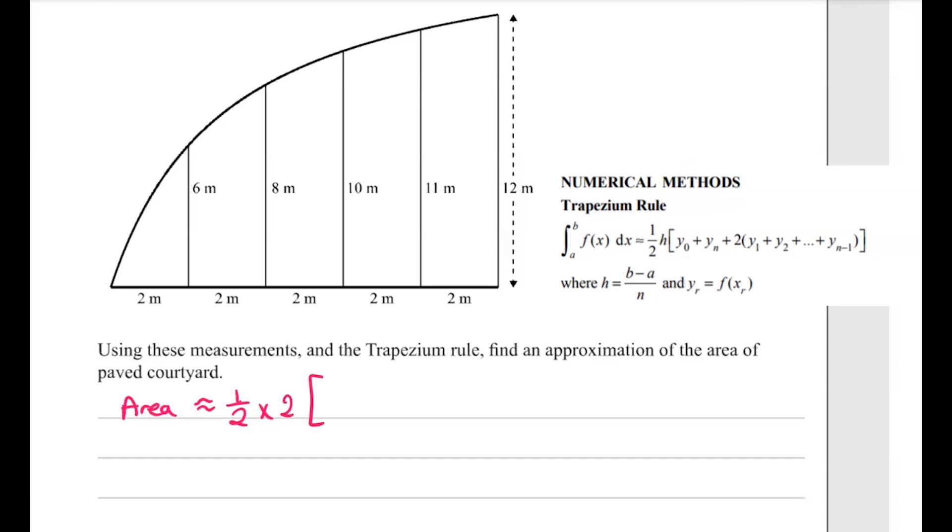Our first y0 is nothing, this value here starts at 0, our last one is 12, and then 2 times all of the ones in between.